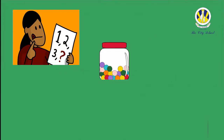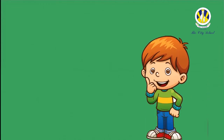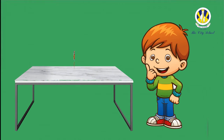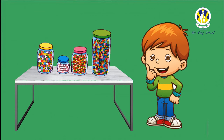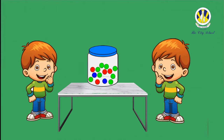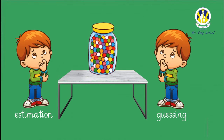So kindergartners, what do you think estimation is all about? Well, when you make an estimation you make a smart guess. What that means is that you look at what you have or what you know and then you make a guess. In everyday life you will hear people use those words as if they mean the same, but estimation and guessing are totally different.